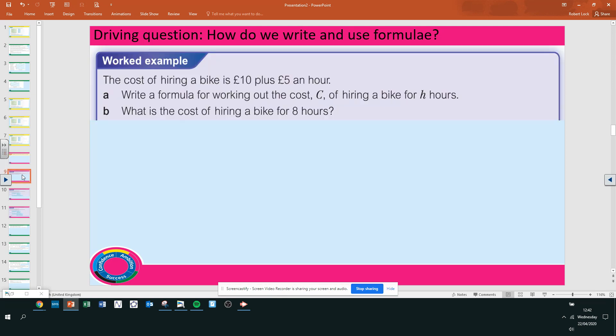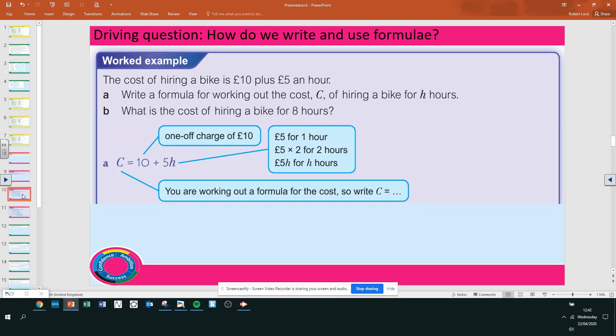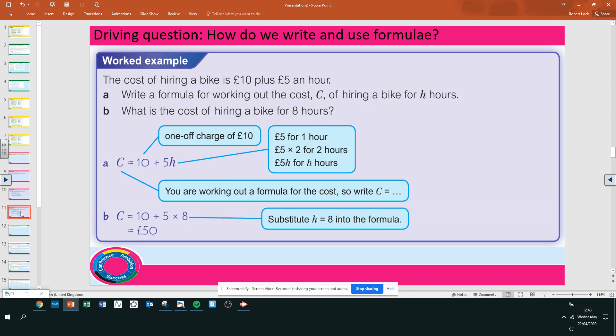A formula is a rule that shows a relationship between two or more variables or letters. Very important. Question 3: The cost of hiring a bike is £10 plus £5 an hour. Write a formula for working out the cost C of hiring a bike for h hours. And b, the cost of hiring a bike for 8 hours. We need to write a formula. C equals £10 plus 5h. So C is the cost, £10 is our one-off charge, and 5 times the number of hours. What's the cost of 8 hours? h will be 8. So C equals 10 plus 5 times 8. That makes £50.